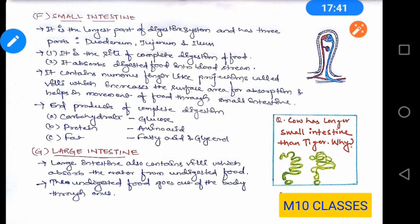Before winding up, I have a question for you: cow has a longer small intestine than a tiger — why? The kind of digestive system depends upon the complexity of the food intake. Tiger is carnivorous and eats flesh, which is mainly protein and can be digested easily. But cow is herbivorous and takes plant products like leaves, which contain cellulose. Cellulose takes a lot of time to get digested, and that is why cow has a longer small intestine than tiger.